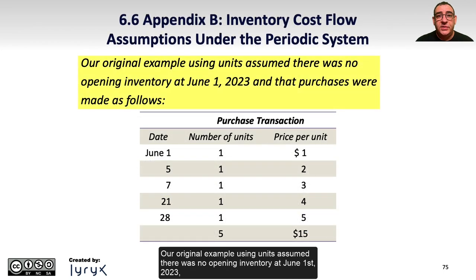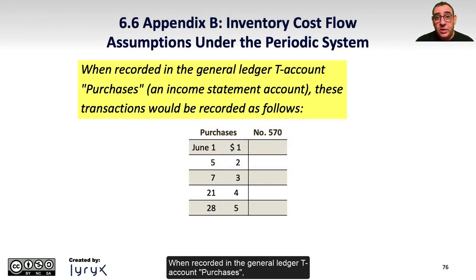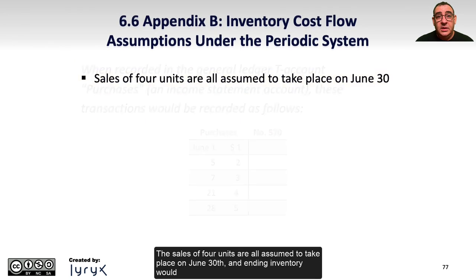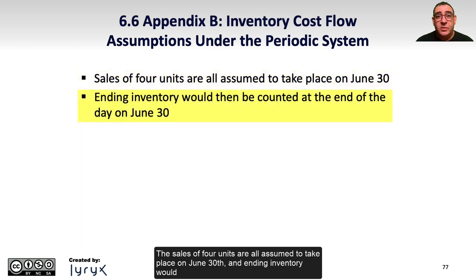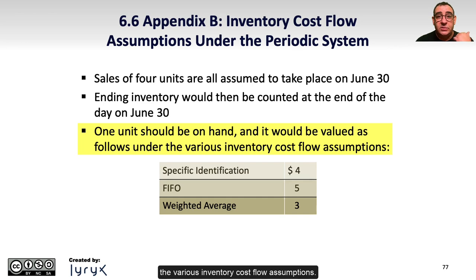Our original example assumes there was no opening inventory June 1, 2023, and that the purchases were made as follows. When recorded in the general ledger T-account purchases, an income statement account, these transactions would be recorded as follows. The sales of four units are all assumed to take place on June 30th, and ending inventory would then be counted at the end of the day on June 30th.